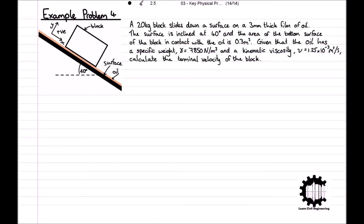For the final example problem, we have a slightly more complicated question than the one in the original video. A 20 kilogram block slides down a surface on a 3 millimetre thick film of oil. The surface is inclined at 40 degrees and the area at the bottom surface of the block in contact with the oil is 0.3 metres squared. Given that the oil has a specific weight of 7850 newtons per metre cubed and a kinematic viscosity of 1.25 times 10 to the power of minus 3 metres squared per second, calculate the terminal velocity of the block.